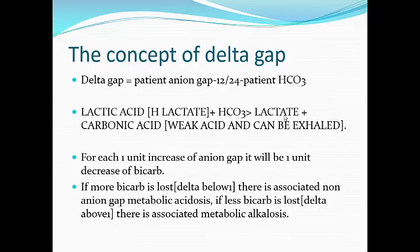What if we find more bicarbonate lost than anion gained? If lactate produces three molecules but we find five or six molecules of bicarbonate lost, the only explanation is that there is another disease or pathology causing loss of bicarbonate — which is normal anion gap metabolic acidosis. So if you find disproportionate loss of bicarbonate compared to the gain of anions, it means there is not only high anion gap metabolic acidosis, but it is mixed with normal anion gap metabolic acidosis.